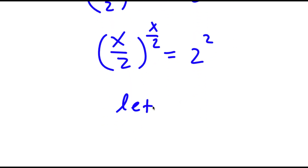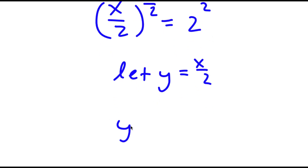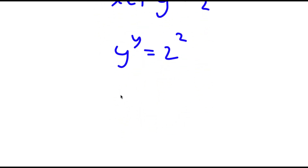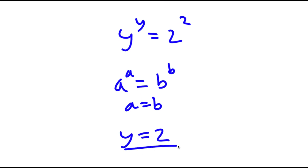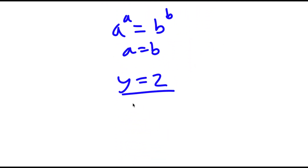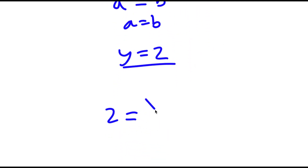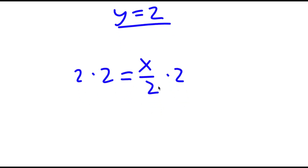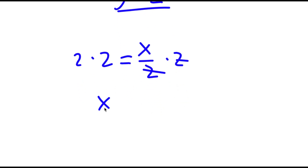Now I'm going to let the variable y equal x over 2. Substituting y for x over 2, I have y to the power of y is equal to 2 to the power of 2. If I have something in the form a to the power of a is equal to b to the power of b, this means a is equal to b. So in this case y is equal to 2. Remember we set y equal to x over 2, so 2 is equal to x over 2. Multiplying both sides by 2, these two cancel out and I get x is equal to 4.